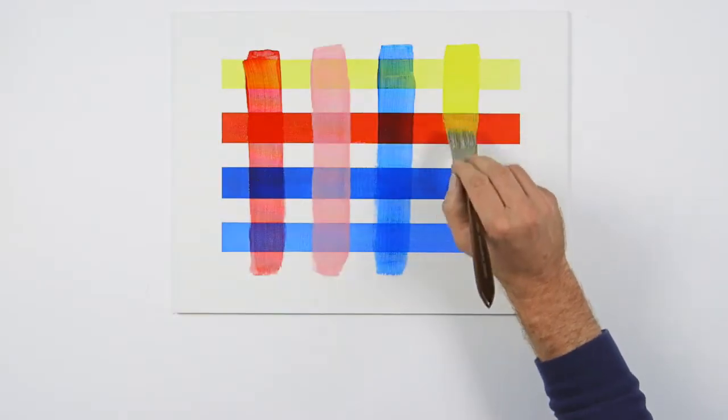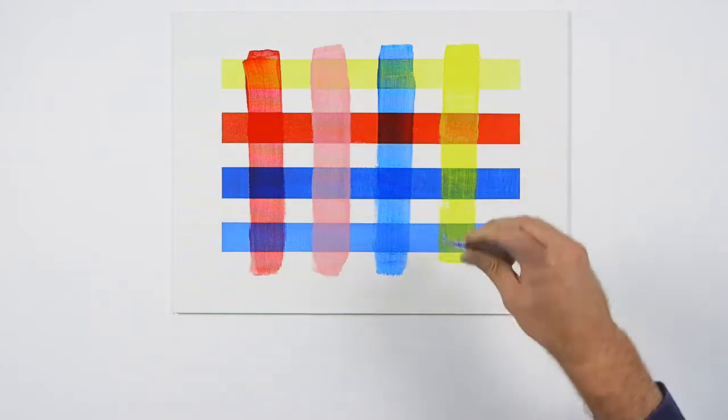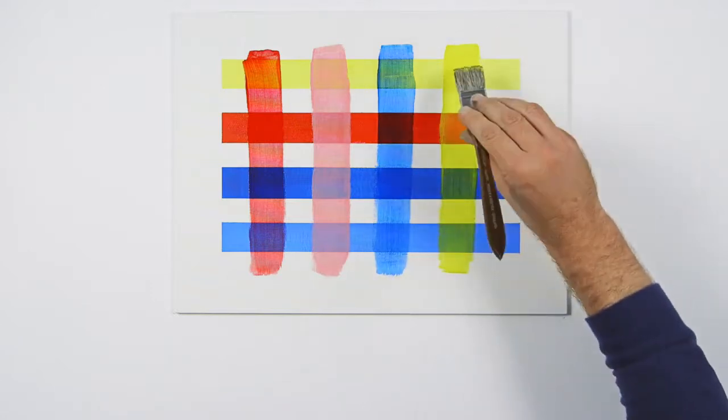Optical mixing has its own advantages as well. One of which is that by relying on layering transparently or semi-transparently, some depth can be created in the painting.